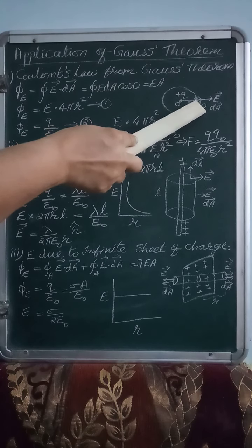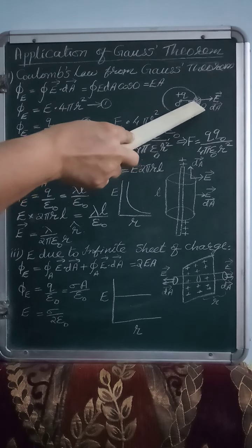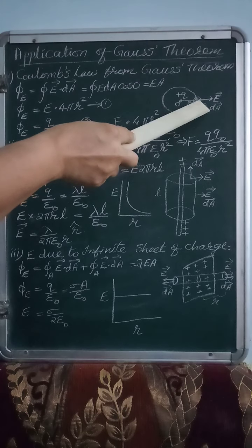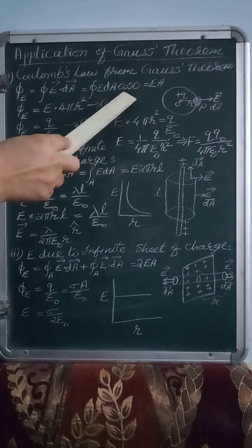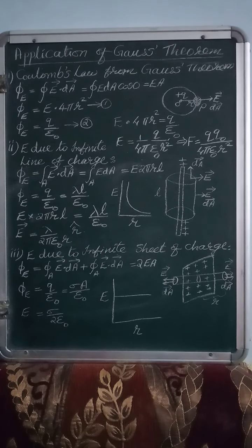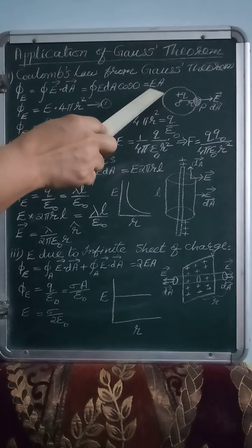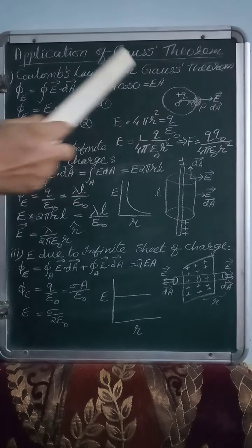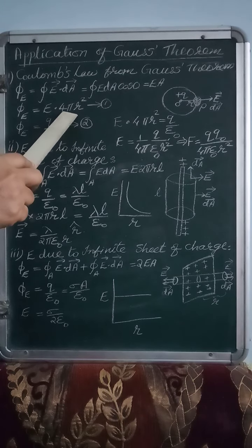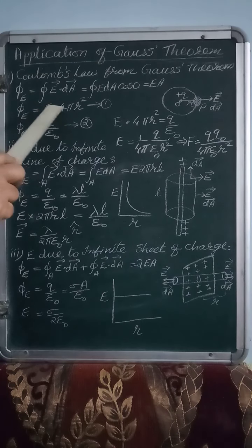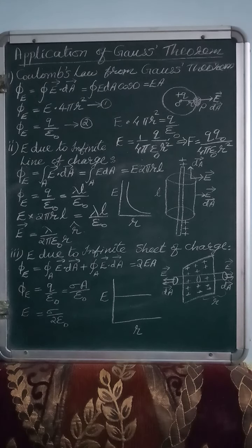Here the electric field vector is outward and the area vector is also outward. So theta in this case becomes 0, and when we substitute in this formula, we get E·A. So the first equation for Φ_E is E·A. The area of the Gaussian surface is that of a spherical surface, so the area is 4πr². Thus Φ_E = E·4πr².